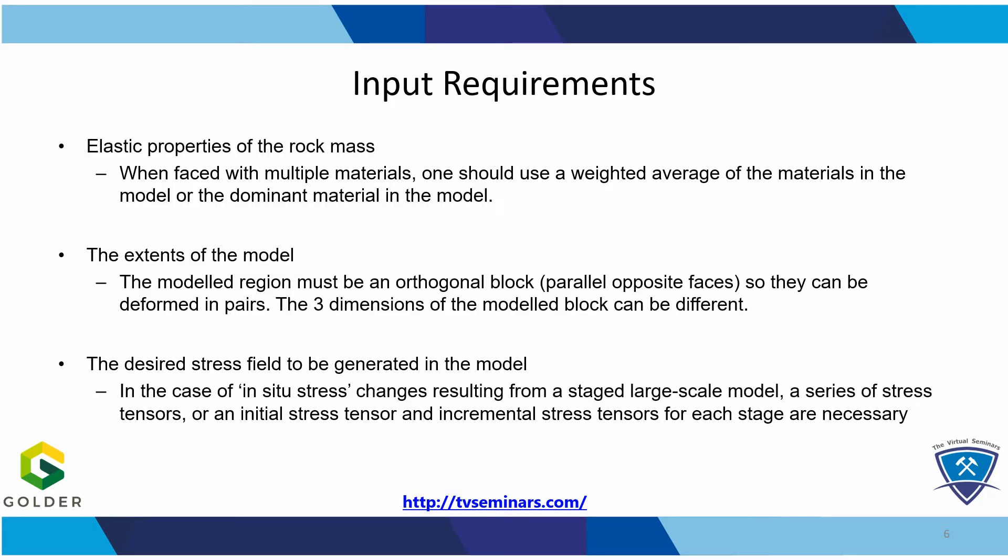Let's look at what kind of information we're going to need to apply this method. Obviously you're going to need the elastic properties of the rock mass, because we need to get an average set of properties for the whole model. If you have multiple materials, you should have a weighted average of the material stiffnesses, or if you have a dominant material, just use that particular stiffness. The model itself needs to be an orthogonal block because we are going to apply deformations to opposite faces, and the three dimensions do not need to be the same — it doesn't have to be a cube but it does have to be orthogonal. And of course you're going to need the stress field that you're trying to generate in the model, whether it is an initial stress field or a stress path, for which you're going to need the stresses resulting from each stage.